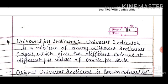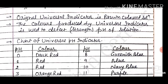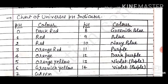Next concept: universal pH paper indicator. A universal indicator is a mixture of many different indicators or dyes which gives different colors at different pH values across the entire pH scale. The original universal indicator is a brown colored solution. The colors produced by the universal indicator are used to detect the strength of pH of a solution.